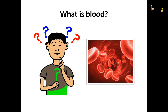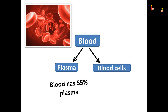Blood is a liquid which has cells of various kinds suspended in it. Let us understand what all cells the blood carries. The fluid part of the blood is called plasma. It is a straw-colored, clear liquid. 55% of the blood is just made of liquid plasma.